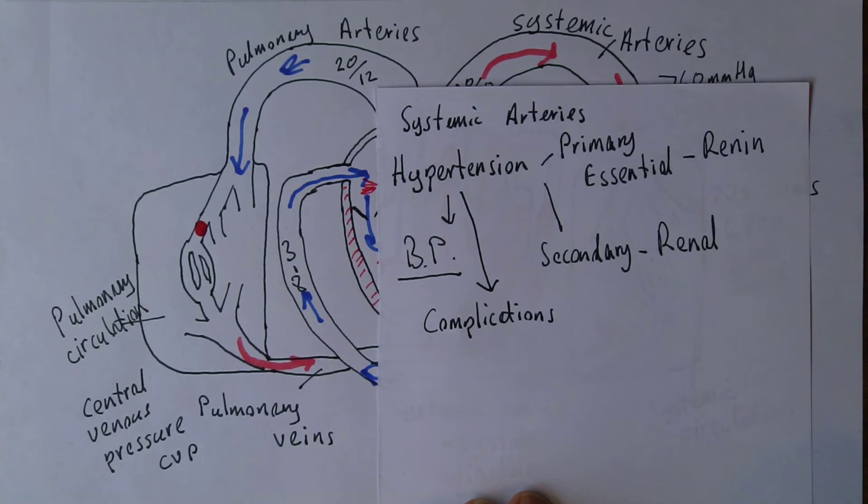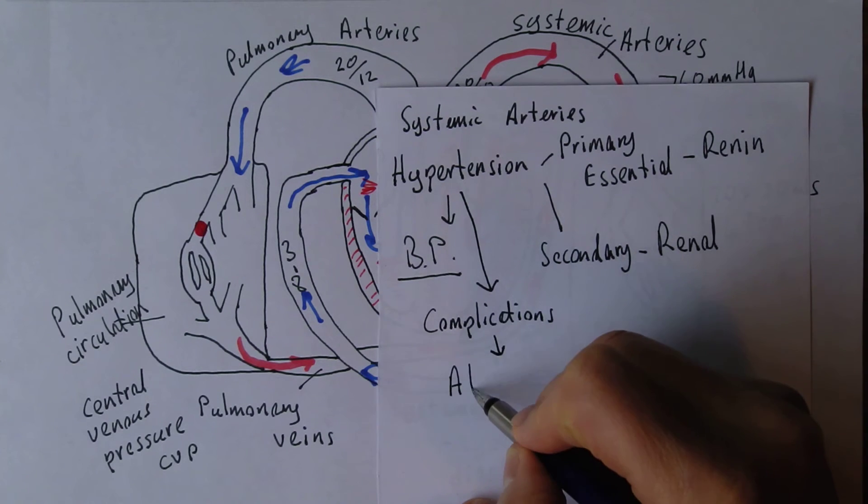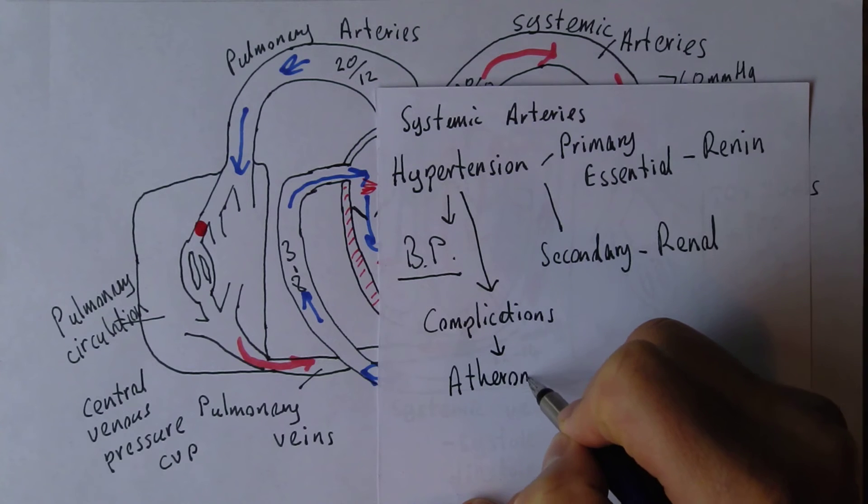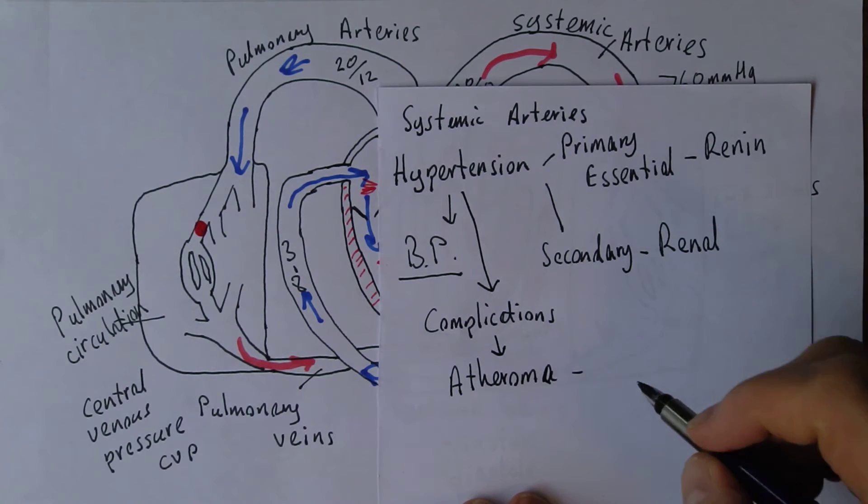And there are complications. One of the complications is atheroma. Atheroma develops in the blood vessels, the disease process of atherosclerosis.